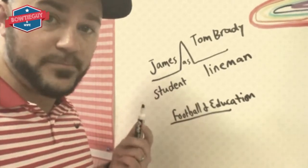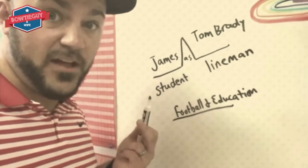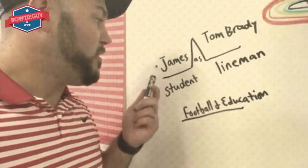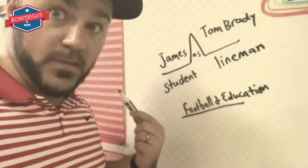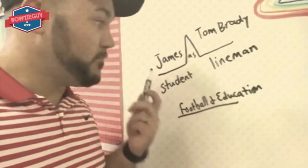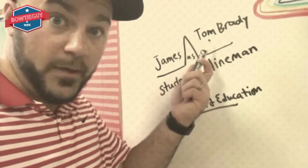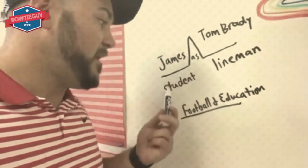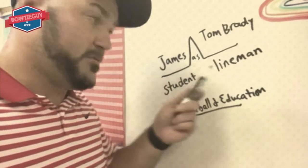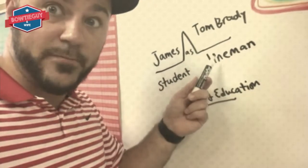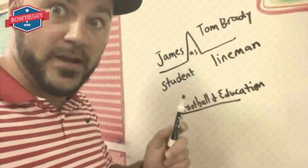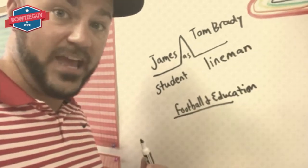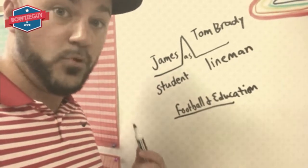This is known as a bridge map, so this is an analogy — a word relationship that we build. James, me, a teacher, is to Tom Brady, a quarterback of the New England Patriots, as a student is to James, as a lineman is to Tom Brady. The relating factor here is football and education. Bridge map.